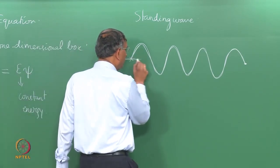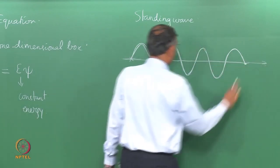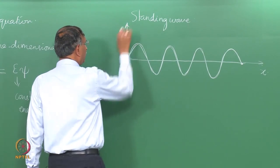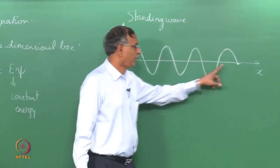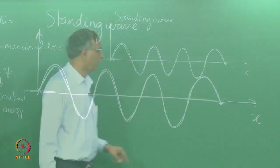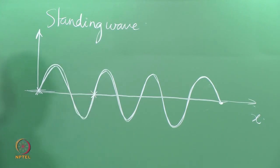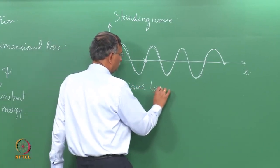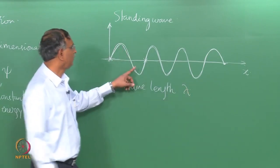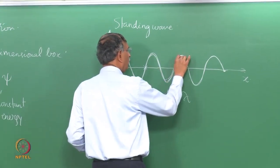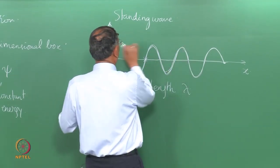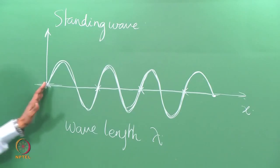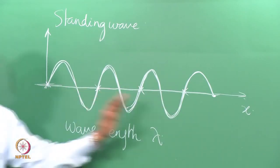Looking at the axes: the x-axis is the coordinate, and the vertical axis is the amplitude of the wave at any position x between some fixed points. For this wave, the length of the repeating unit is called the wavelength lambda. Here we have 1, 2, 3, and 3 and a half. It has to be either exactly a half wavelength or a full wavelength for this to be a standing wave.